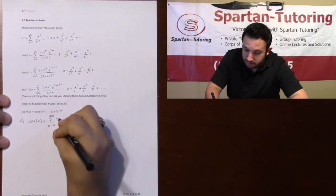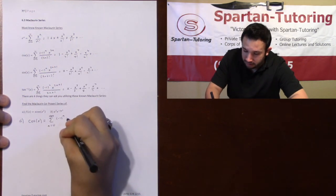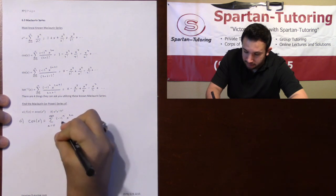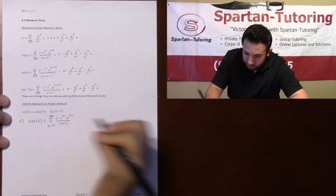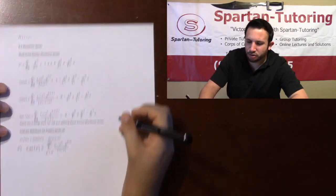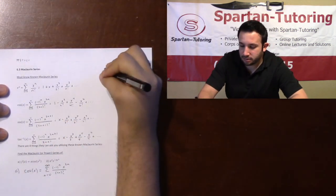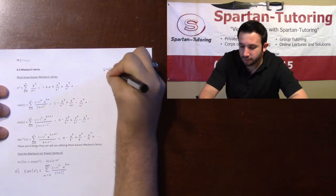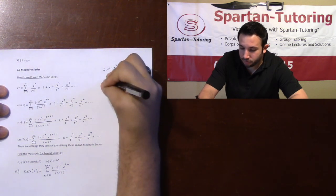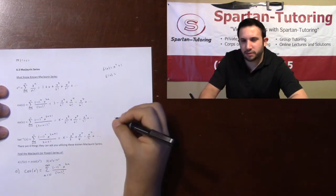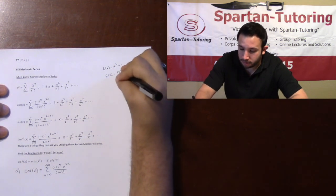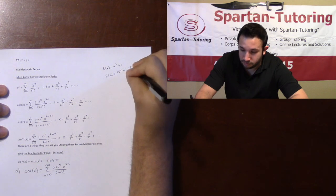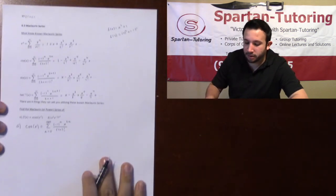So cosine of X is going to be negative 1 to the N, X to the 2N, over 2N factorial. Now just as a really quick, before I get into this, a real quick pop quiz. If F of X is X squared plus 1, what's F of 2 equal to? Well, F of 2 is equal to 5, right? But how'd you do that? Well, 2 squared plus 1, which is 5. Keep that in the back of your mind.